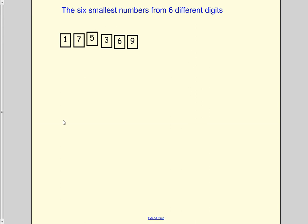So let's take a look at making the six smallest numbers from six different digits. To start with, I'm going to take my six digits and arrange them from least to greatest to make the smallest number that I can from these digits.